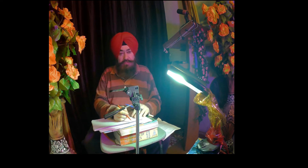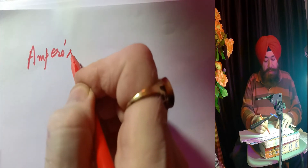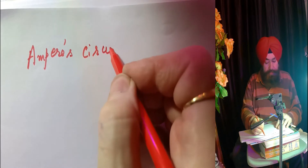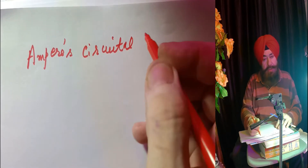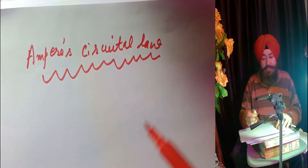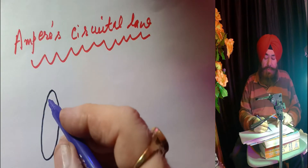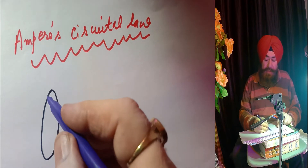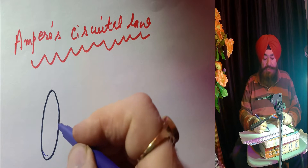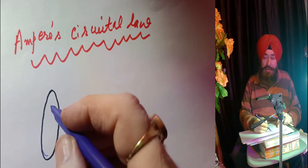My dear friends, today I am going to discuss with you a very important law that is called Ampere's Circulation Law. This law states that if I am having any closed loop, may be circular, may be of any shape and of any size,